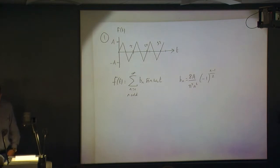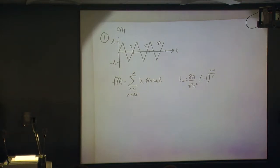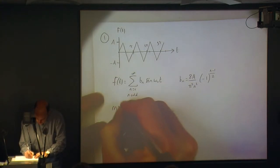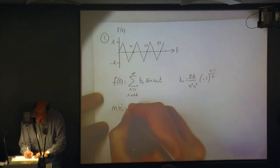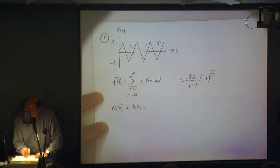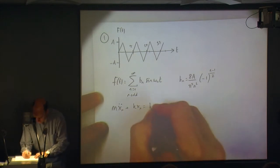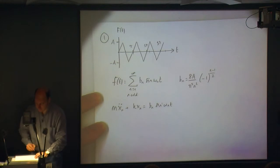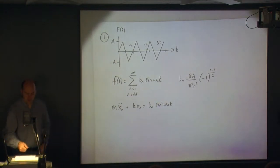It says: find the steady state solutions for x(t), where x denotes the displacement of the mass against which the force is being applied. So our equation of motion for the nth term looks like this: m ẍ_n + k x_n = b_n sin(ω_n t). There's our forcing function.